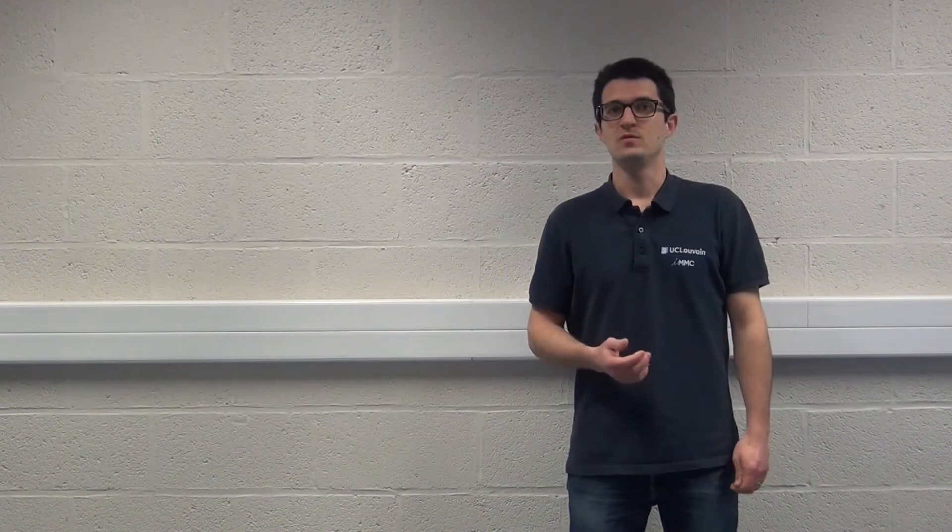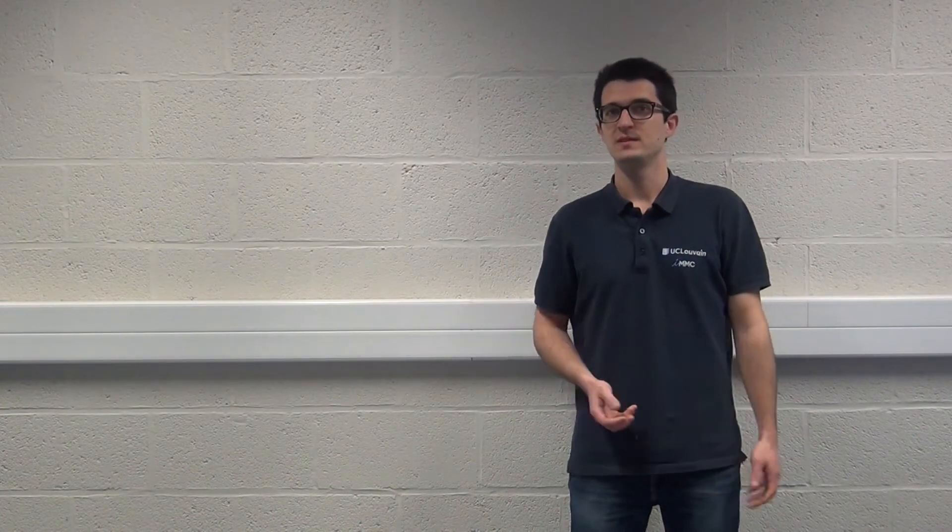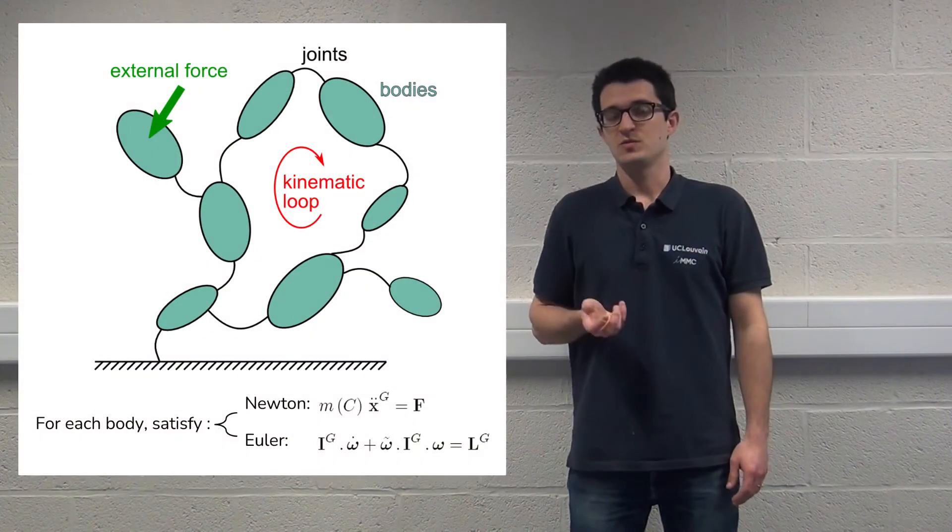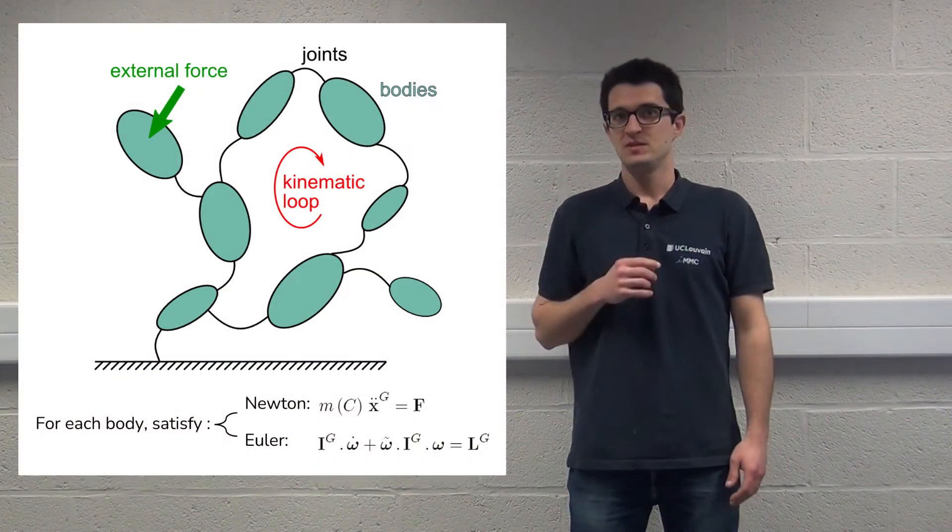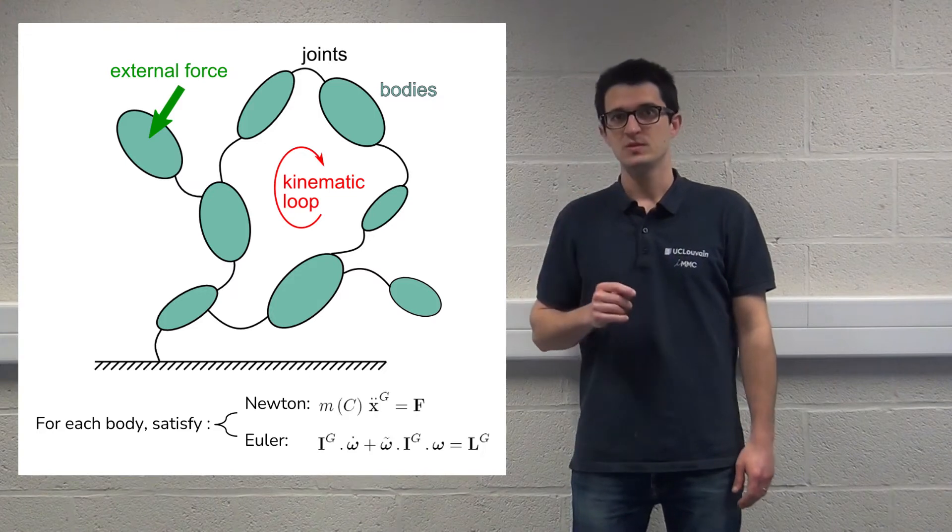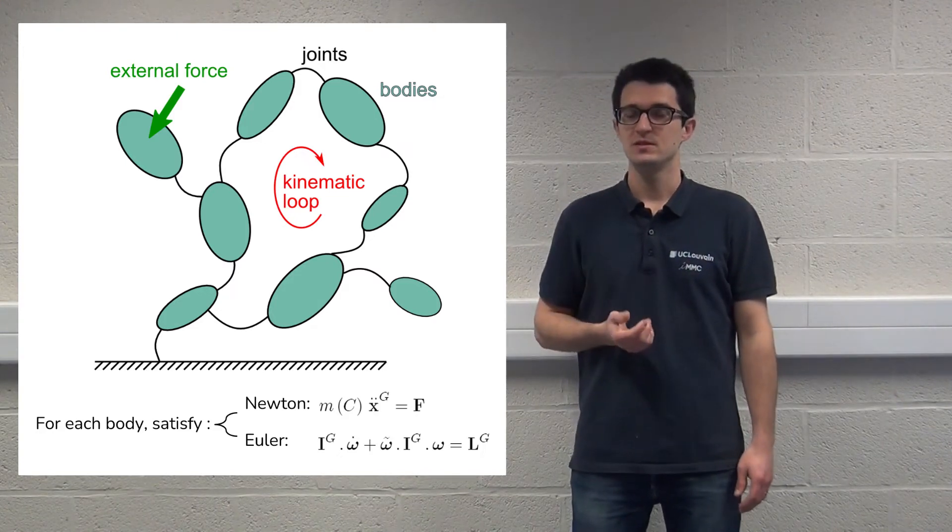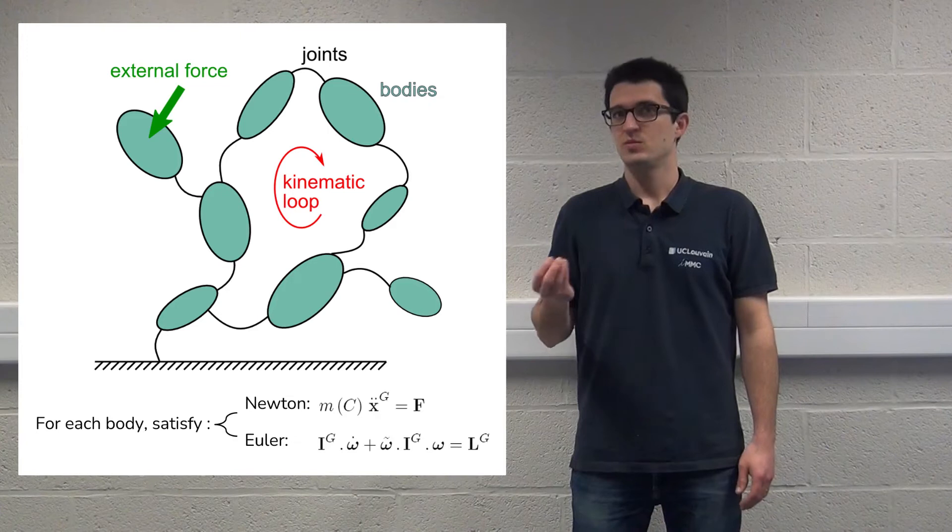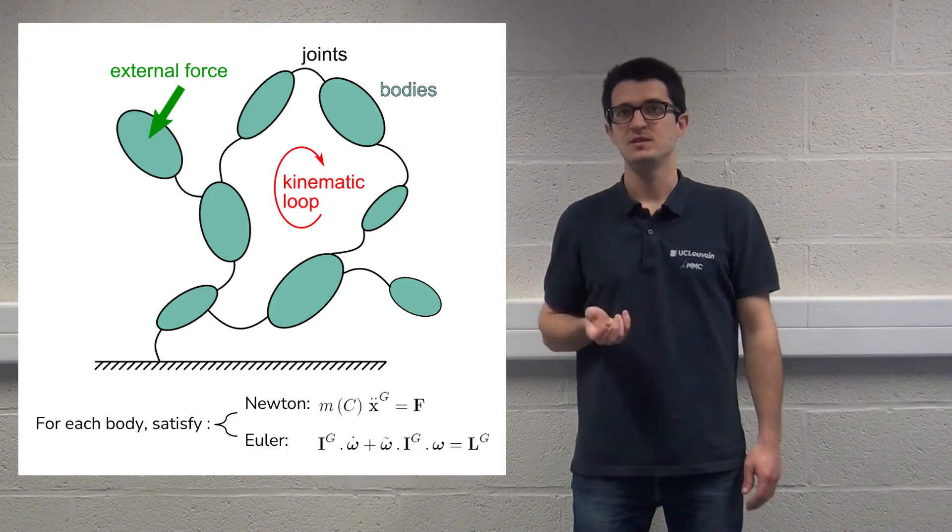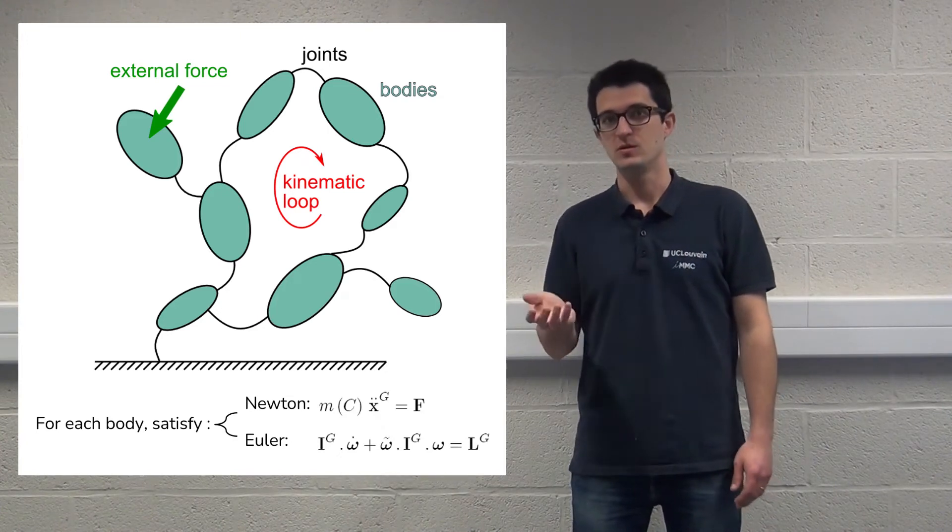The principle of the multibody approach is that we have complex systems which contain bodies connected by joints. Those systems can contain kinematic loops, can be subjected to external forces, and so on. The basic principle is that for each body of the system, we have to solve the Newton and Euler equations.